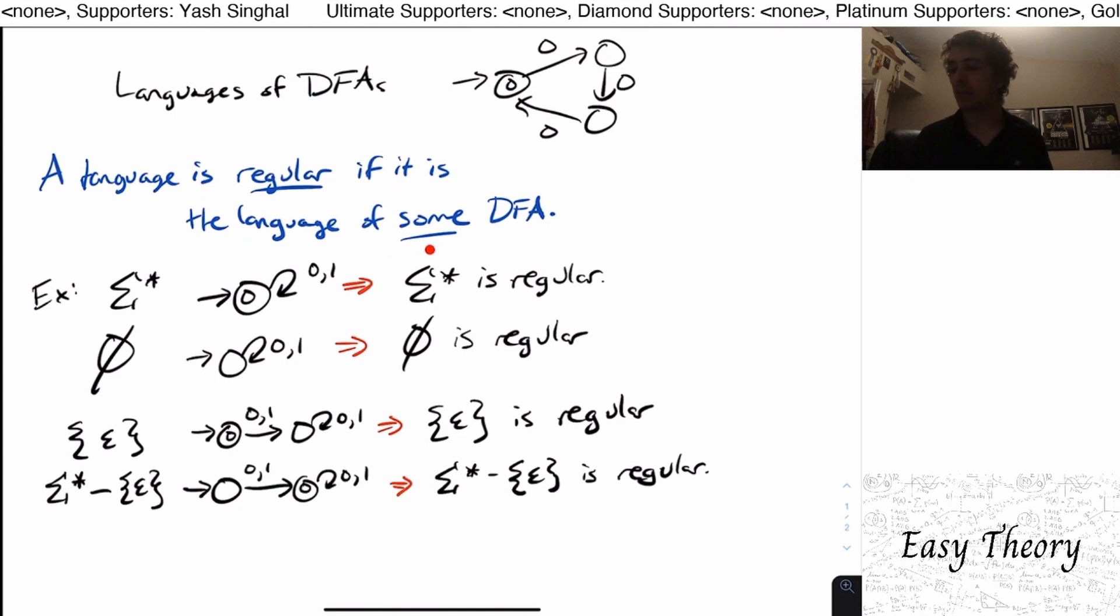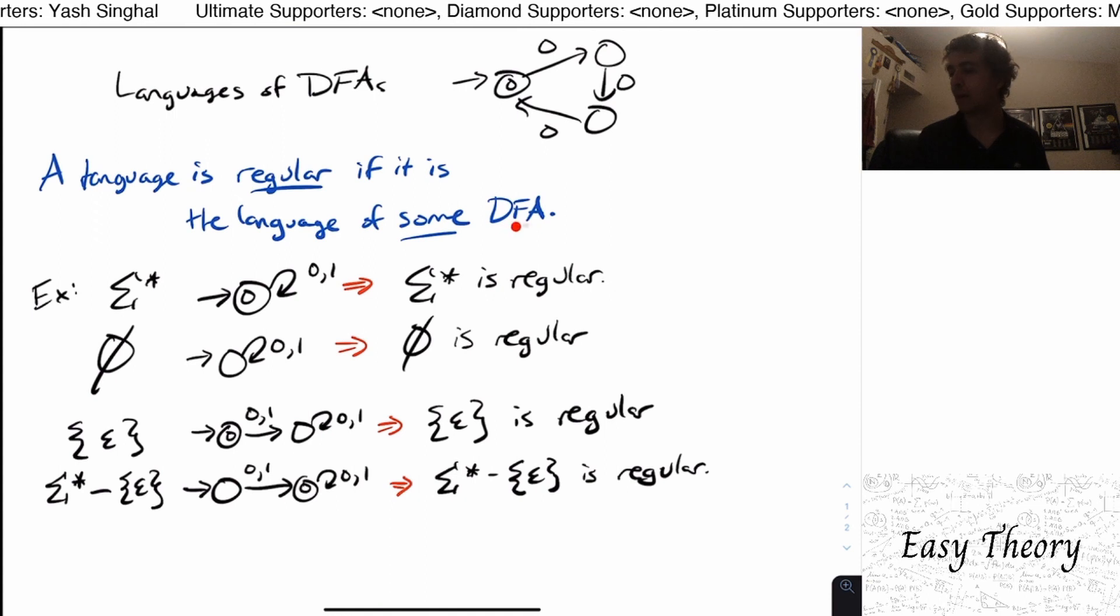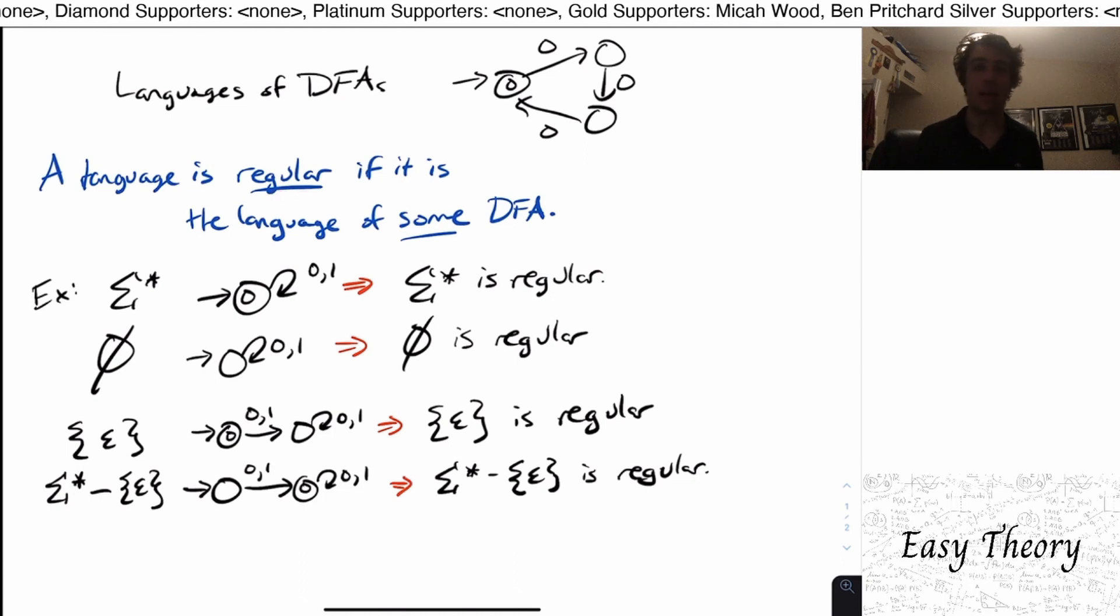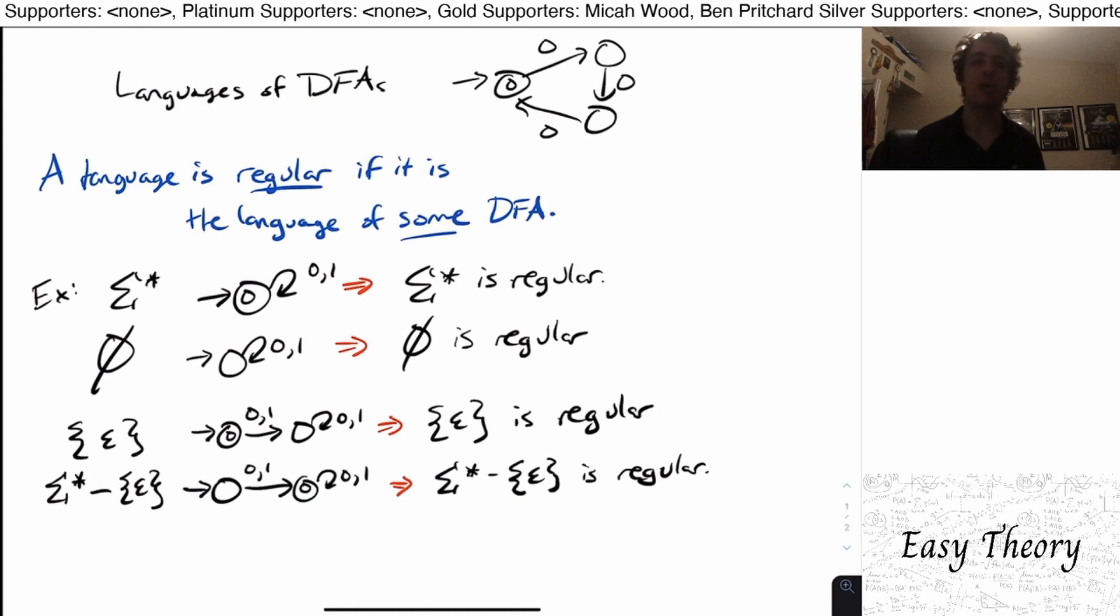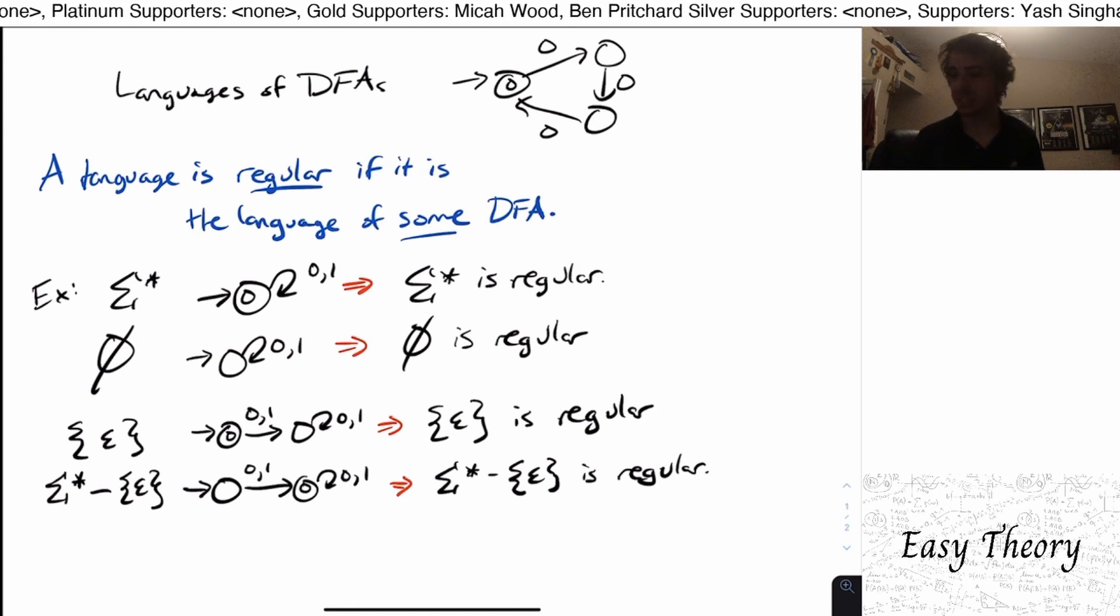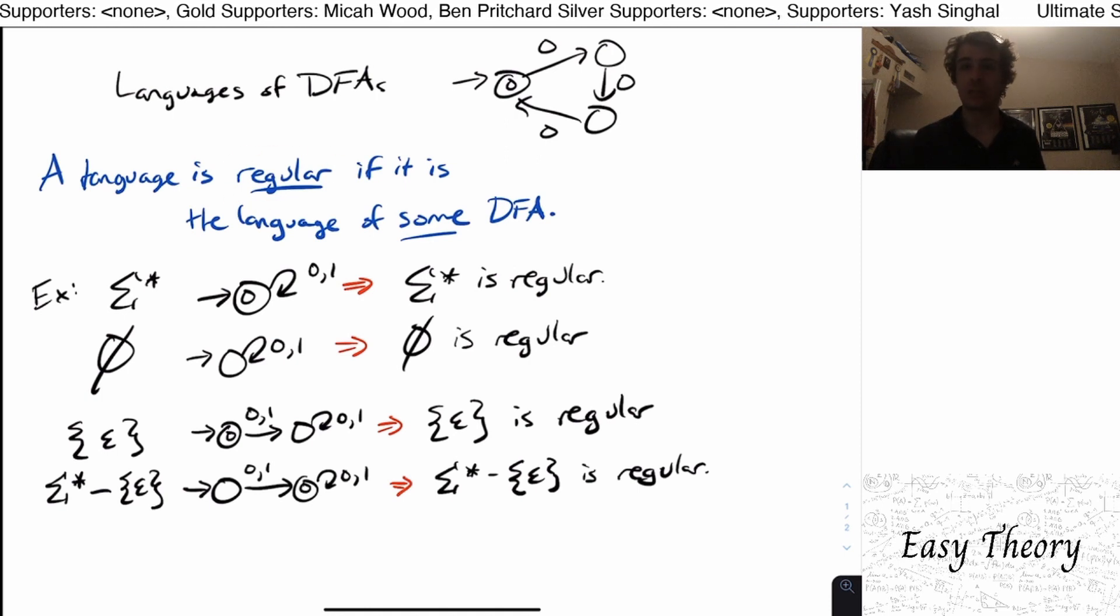The point here to always remember is that a language is regular, that's the name of the language, if it is the language of some DFA. And there are actually some circumstances where we do not know how to make the DFA, but we know that it actually exists. And that's all that is needed to show that the language is regular. Whatever it is, as long as there is some DFA and we know that it exists, maybe we don't know how to make it, but we know it exists. Therefore, that language is regular.